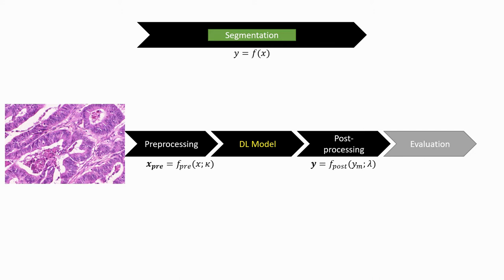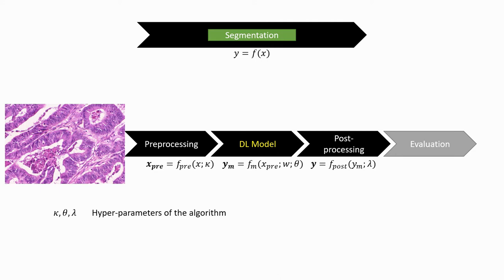For the deep learning model itself, we distinguish three types of arguments: the input (the result of pre-processing), the weights of the different connections within the neural network, and other parameters such as the number of layers, feature maps, initialization function, learning rate, etc. For all parameters relating to choices in the design of the overall algorithm — from the network architecture to any parameter of the pre- and post-processing steps — we use the term hyperparameter, to distinguish it from the weights of the model itself.